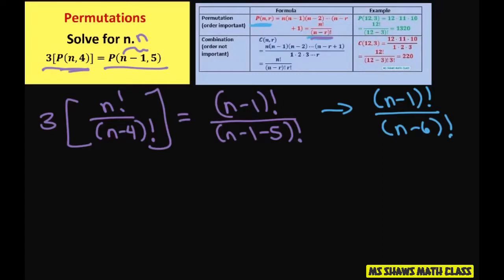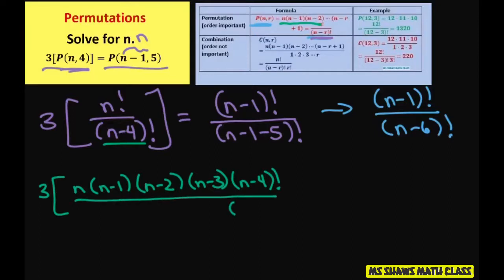So now we're going to use what I discussed earlier. We're going to expand this all the way to n minus 4 factorial. So we're going to get n times n minus 1 times n minus 2 times n minus 3 times n minus 4 factorial divided by n minus 4 factorial. And these cancel out.